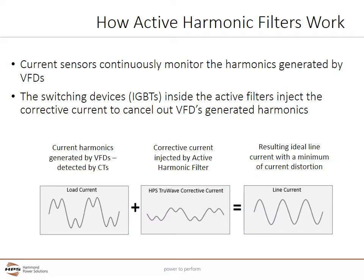Here is a diagram of how an active harmonic filter works. The unit uses highly accurate current sensors to continuously monitor the current harmonics and instantly creates the current flow from its IGBT-based output module to make the resulting line current harmonic-free, balanced, and at unity power factor. Note that while an active harmonic filter can correct for power factor, it is often much more economical to create better power factor using capacitors. Active harmonic filters are often necessary to protect power factor correction capacitors from overheating, since those capacitors attract current harmonics which can damage and destroy them if not mitigated.